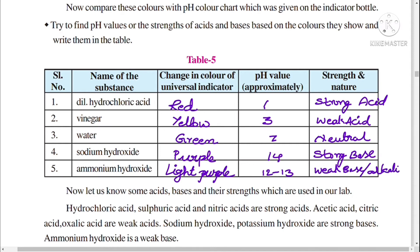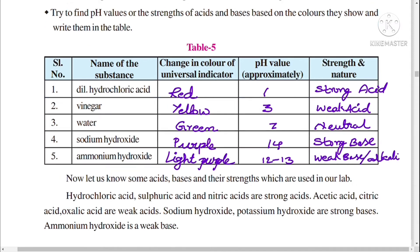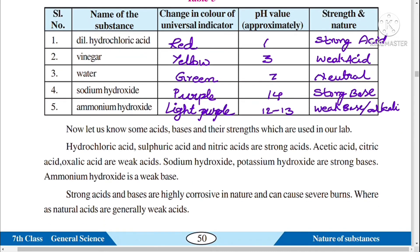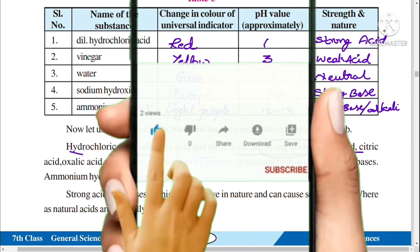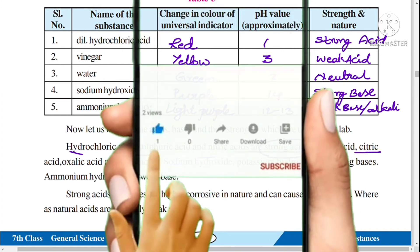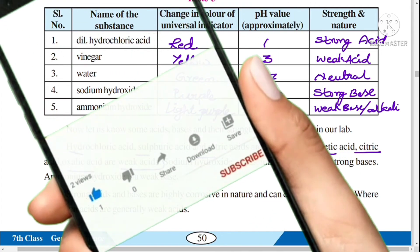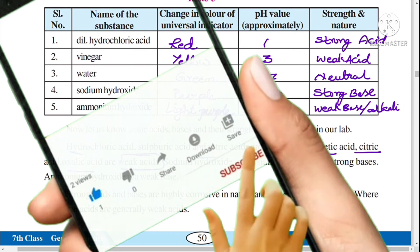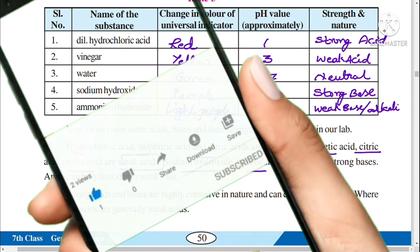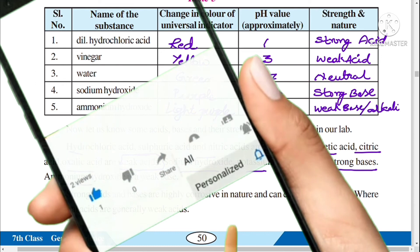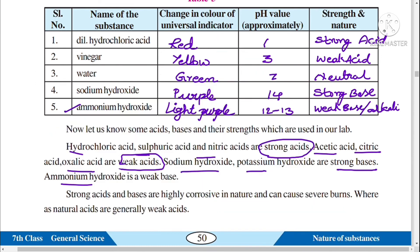To conclude: hydrochloric acid, sulfuric acid, and nitric acid are examples of strong acids. Acetic acid, citric acid, and oxalic acid are weak acids. Sodium hydroxide and potassium hydroxide are strong bases, and ammonium hydroxide is a weak base.